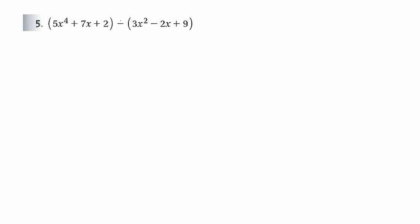For number 5, we have subtraction again. What I like to do is change this subtraction to addition — distribute the negative by changing all these signs, and then either circle or box or write underneath. But here is a problem: this one has a fourth power, and this one doesn't have a fourth power. So I can't combine this 5x to the fourth and this 3x squared.